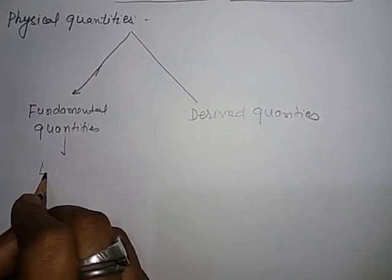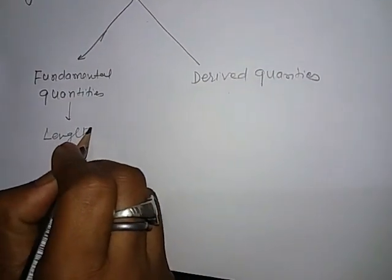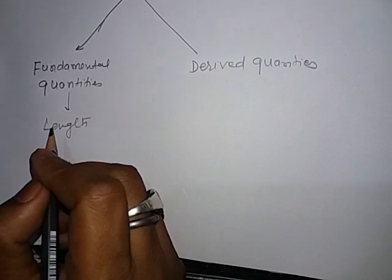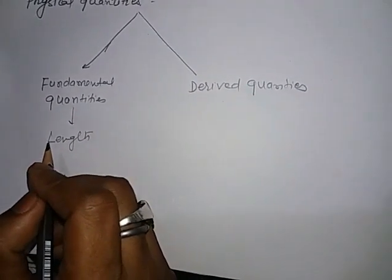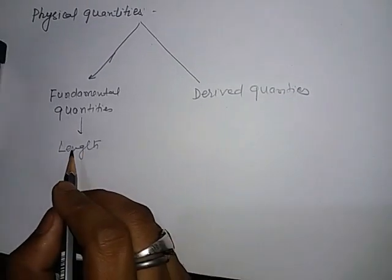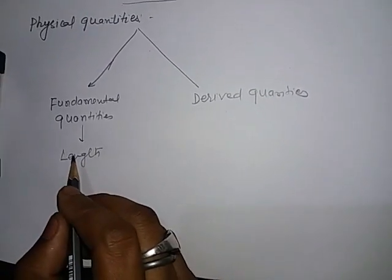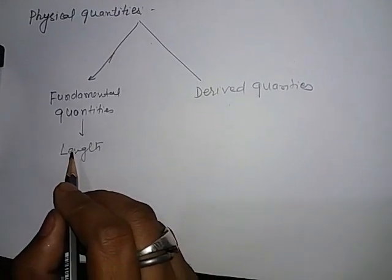Example: length. To measure length, you don't need any other fundamental physical quantity. Time, mass - these are all fundamental quantities.